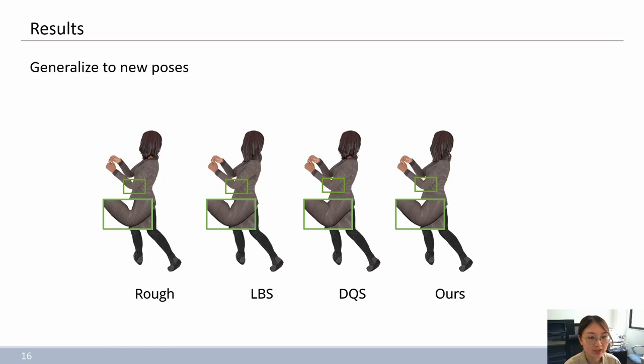To demonstrate the generalization ability of our network to poses, we evaluate a character in training set and animate it with a new motion of playing golf. We compare the result of rough deformation,